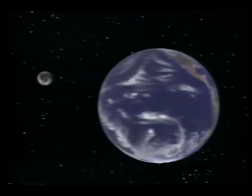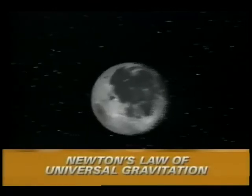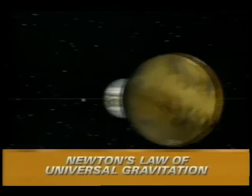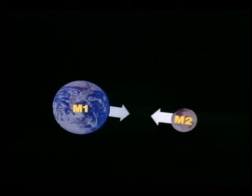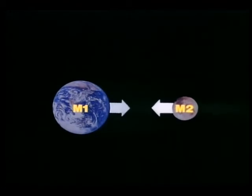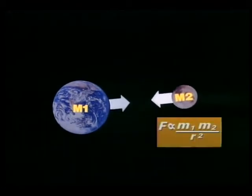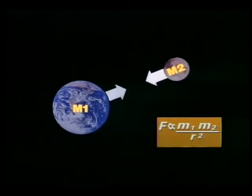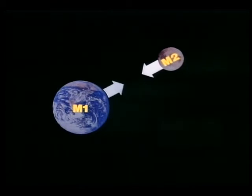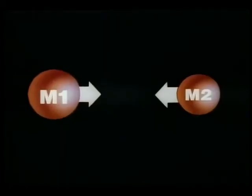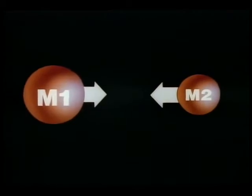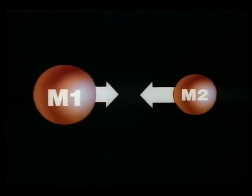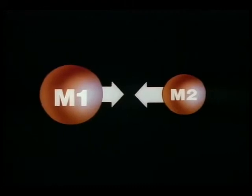They explain why a satellite stays in orbit. Newton's law of universal gravitation: any two objects in the universe, such as the earth and the moon, attract each other with a force directly proportional to the product of their masses, and inversely proportional to the square of the distance between them. Stated more simply, the more massive the objects are, or the closer they are, the greater the gravitational pull between them.